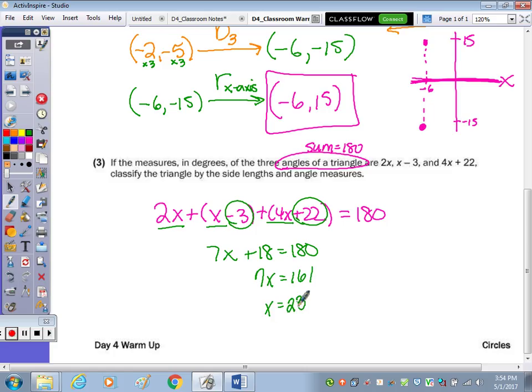and x is 23. Now I'm going to find 2x, which would be 2 times 23, which is 46. And then x-3 would be 23 minus 3, 20.